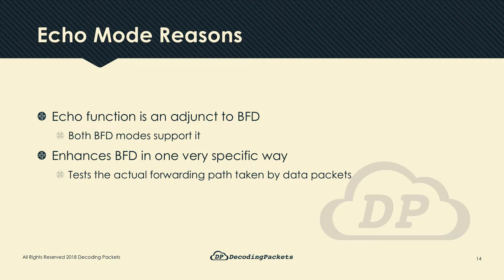So back to our regularly scheduled programming: the echo function. It enhances BFD in a very specific way. The echo function implementation allows devices running BFD to test their neighbor's actual forwarding path and the health of that forwarding path — something that control packets are not able to do.